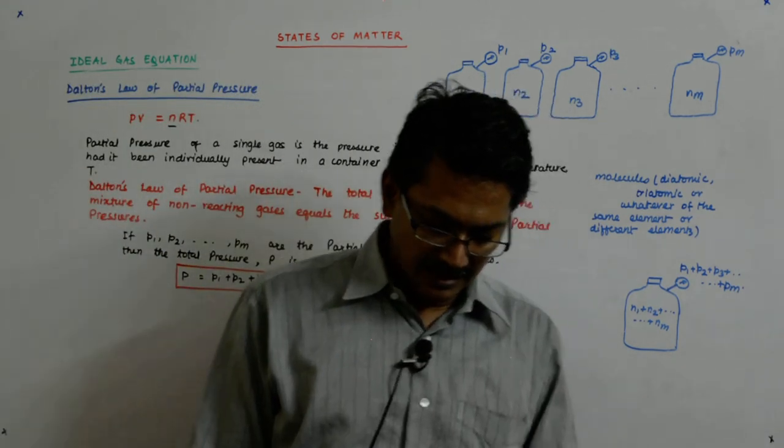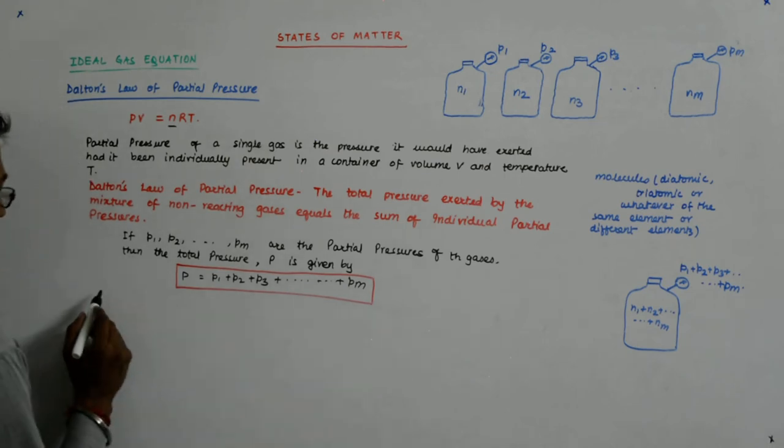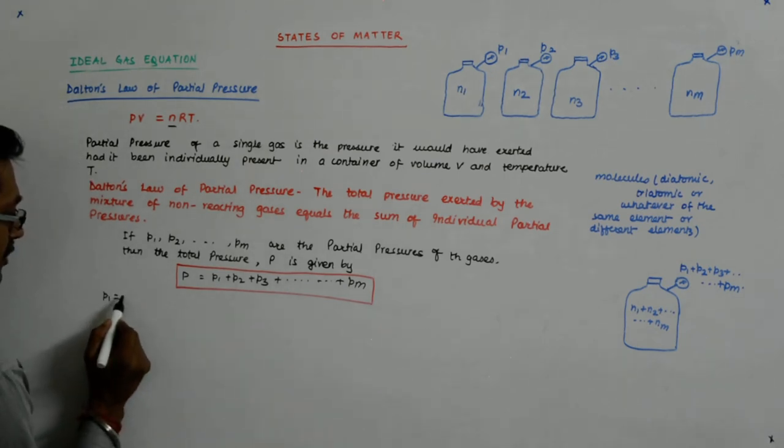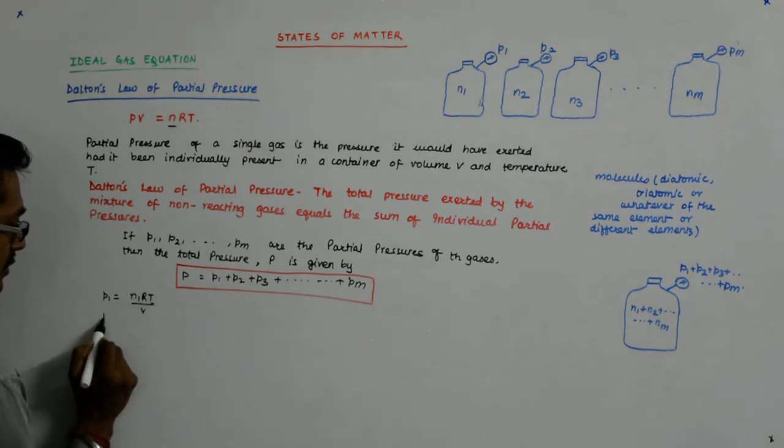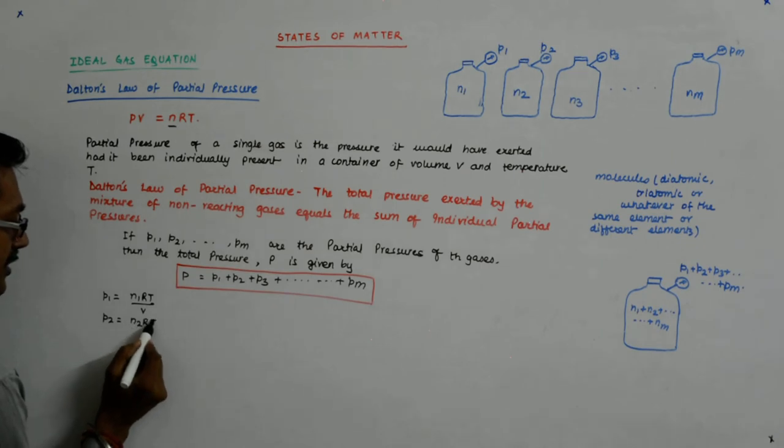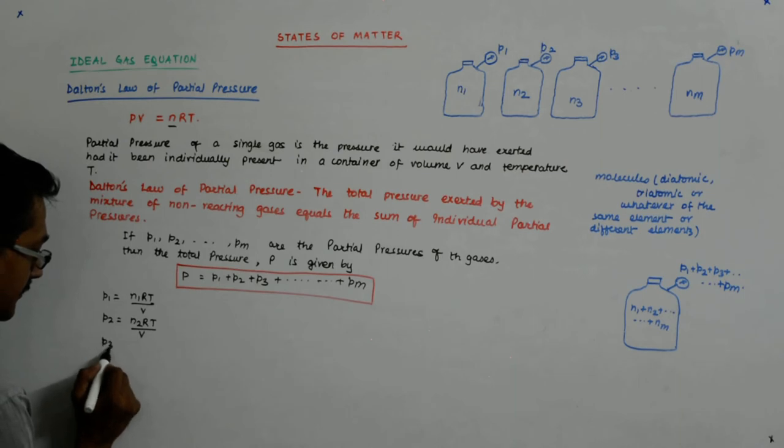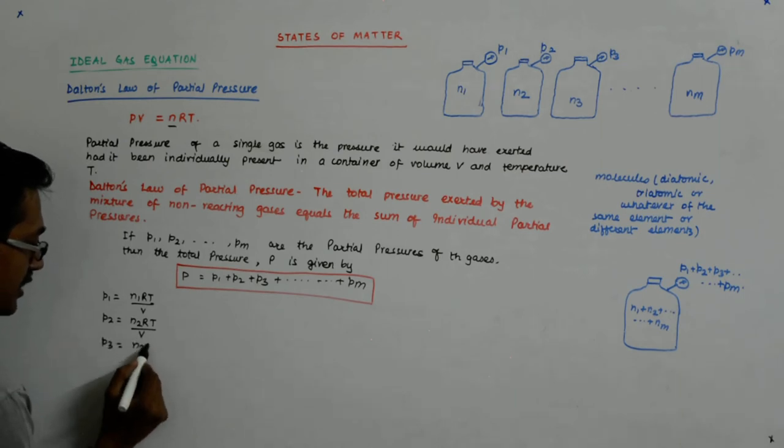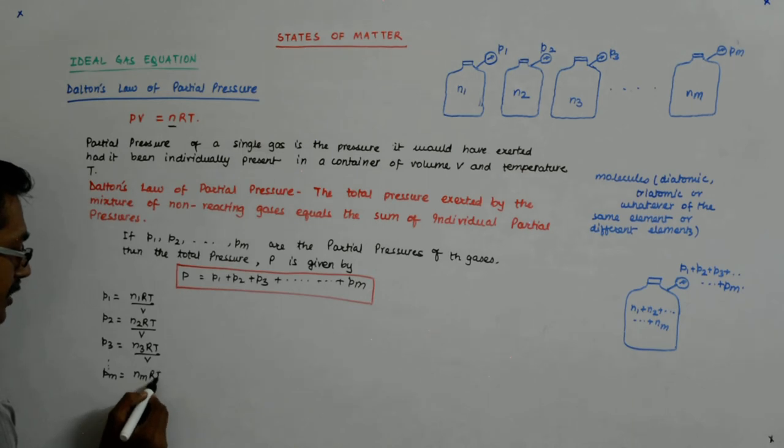Now, there is an interesting fallout of all this. We know that P1 equals N1RT upon V. P2 equals N2RT upon V. P3 equals N3RT upon V, and so on. Pm equals NmRT upon V. Okay?